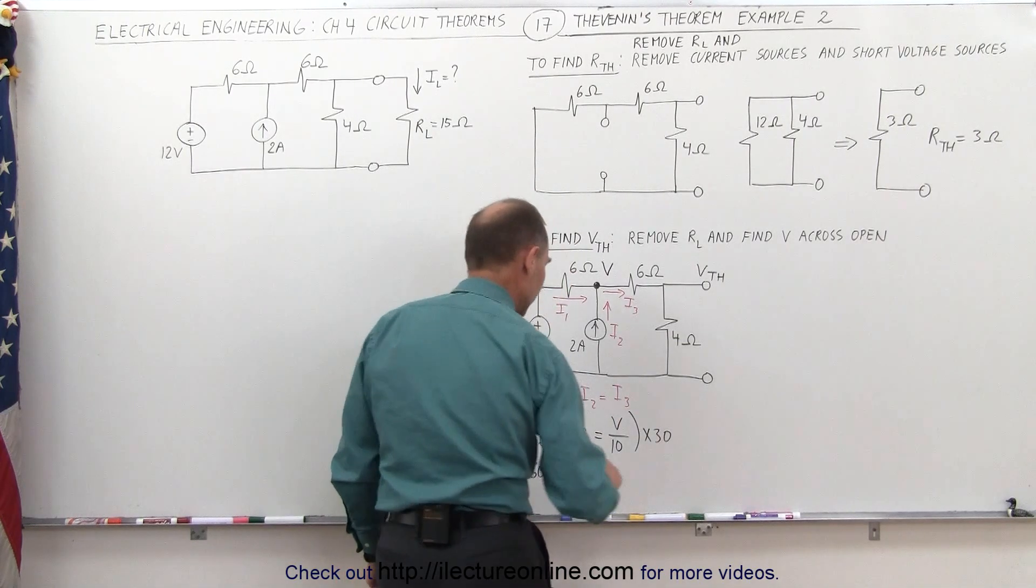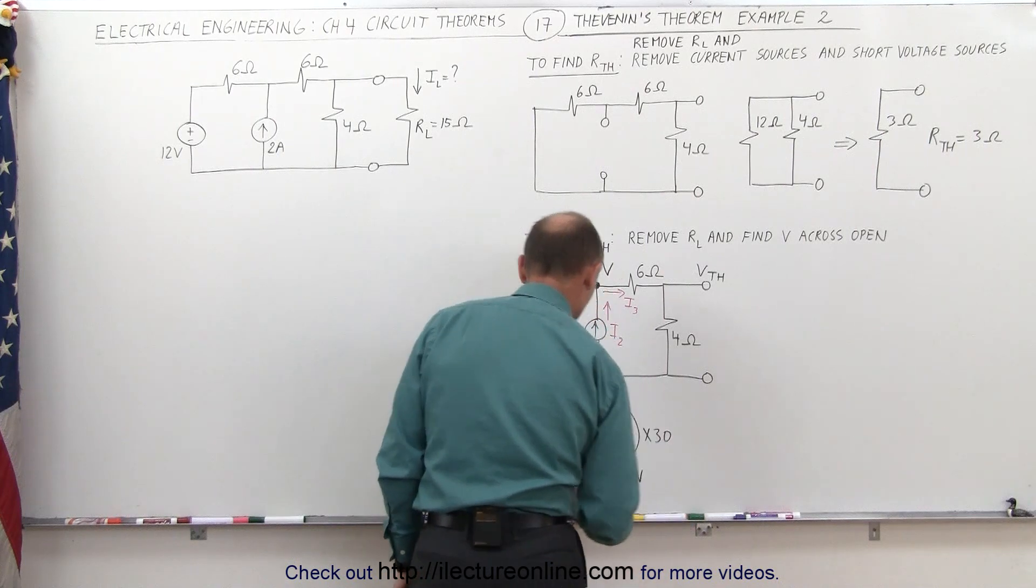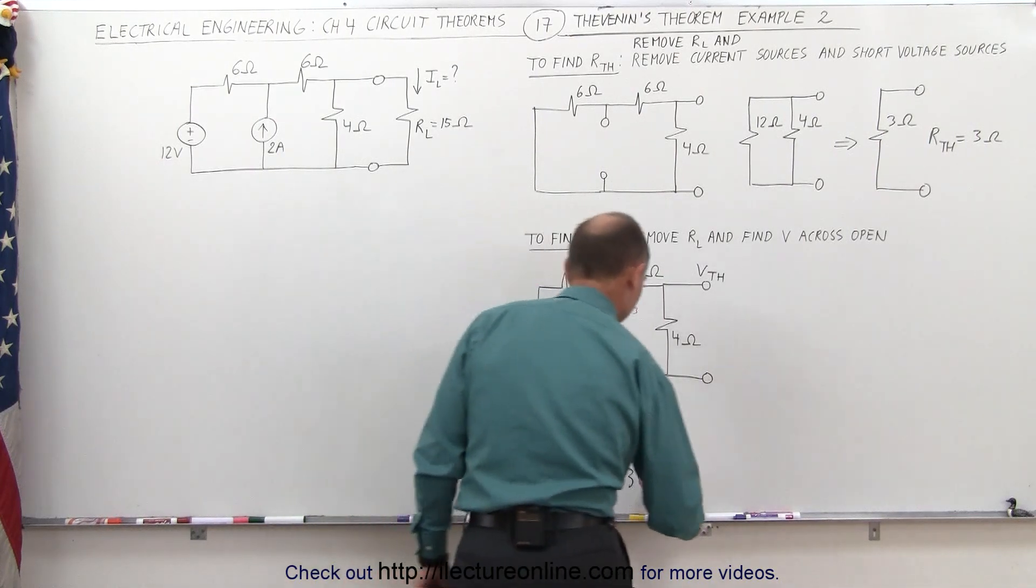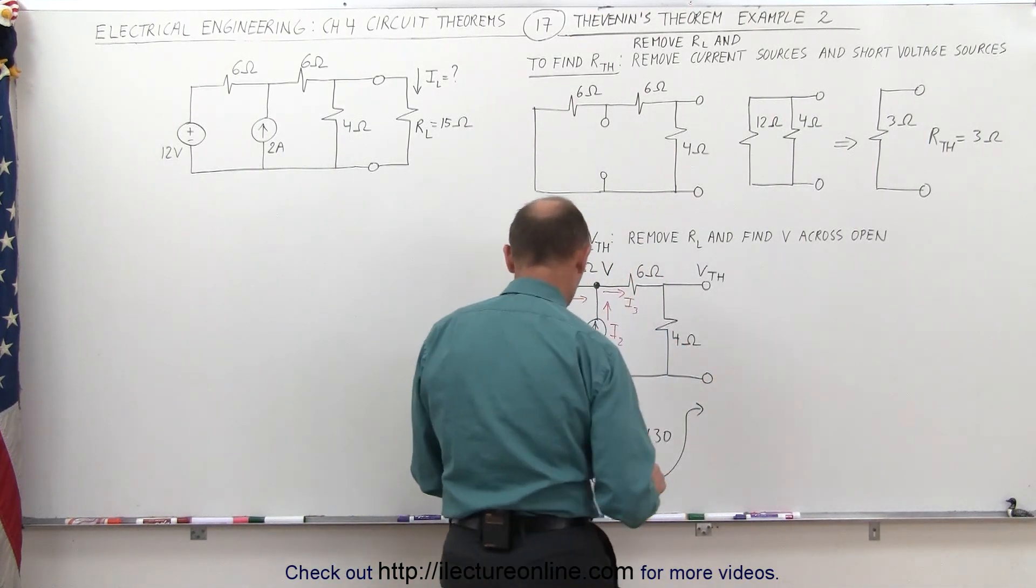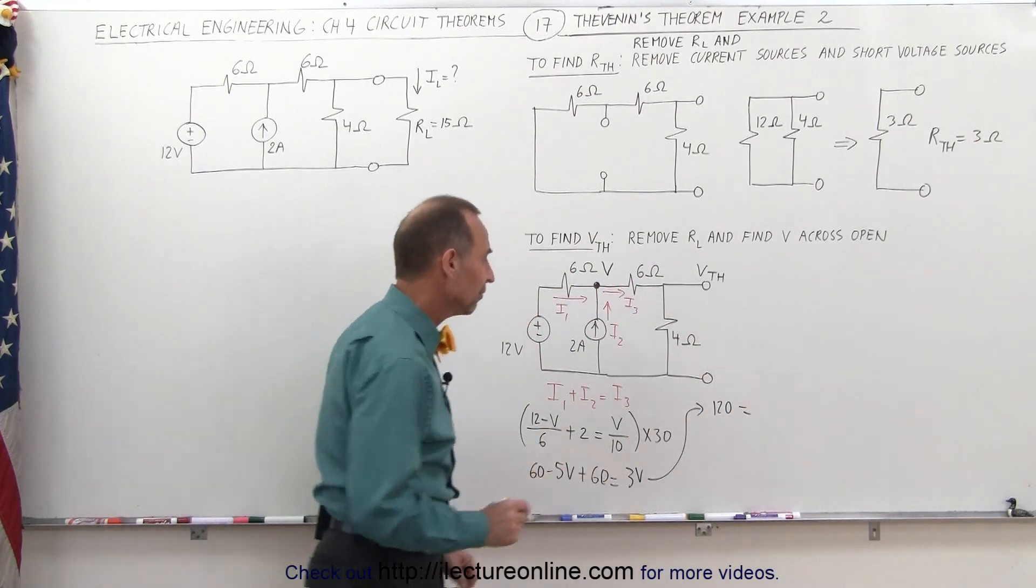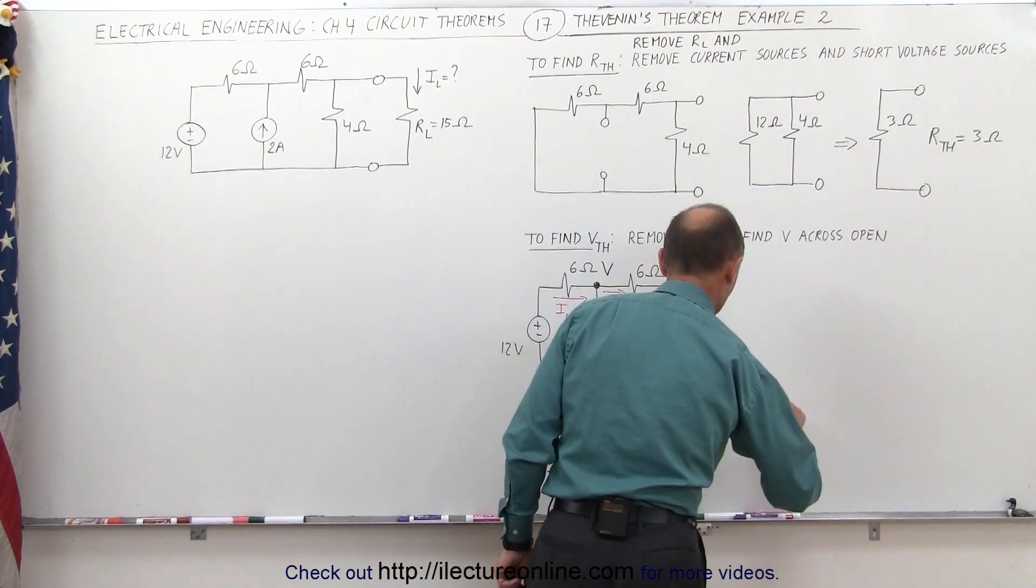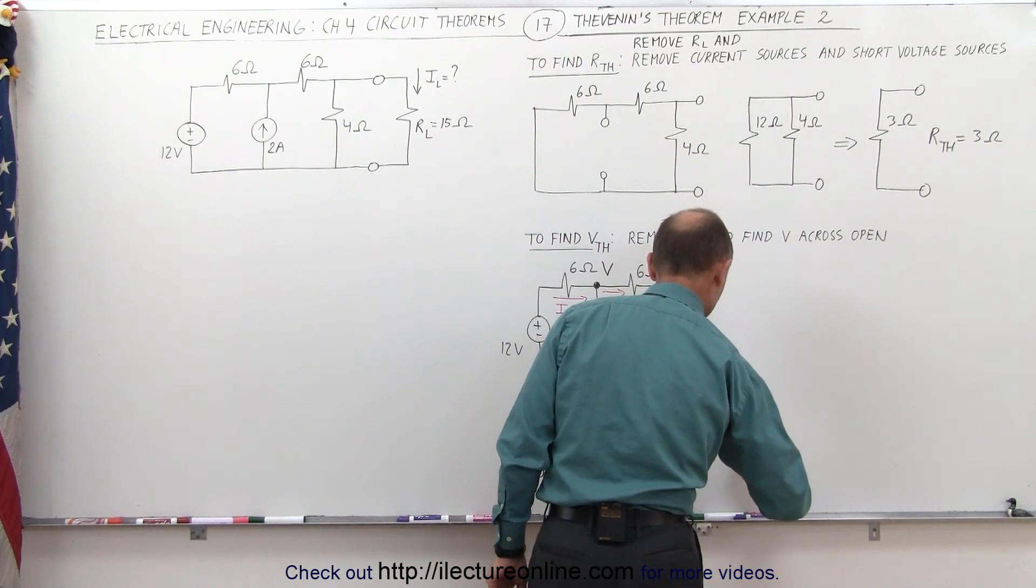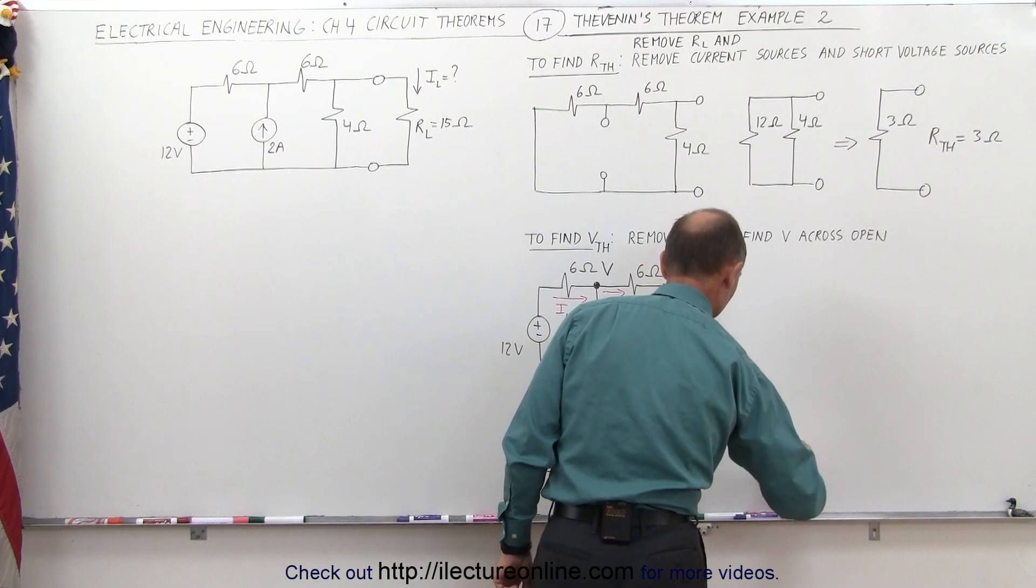equals, 10 goes into 30 three times, equals 3V. Moving the 5V across, end up with 120 is equal to 8V on the right side, which means that V must be 120 divided by 8, which is 15 volts.